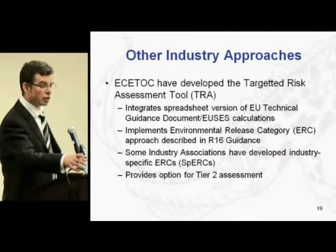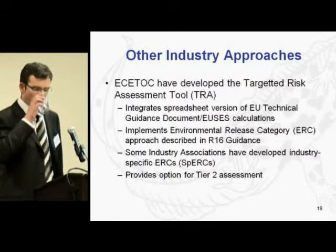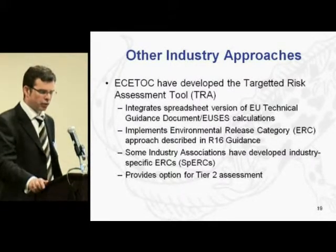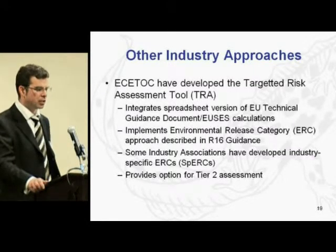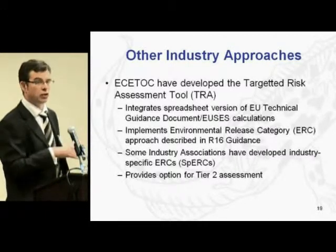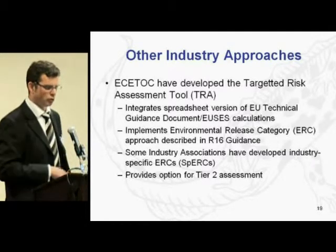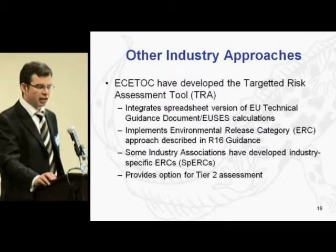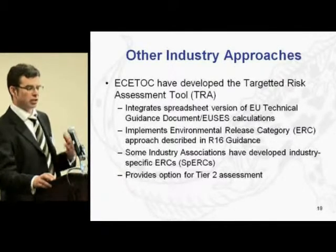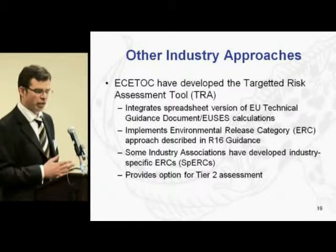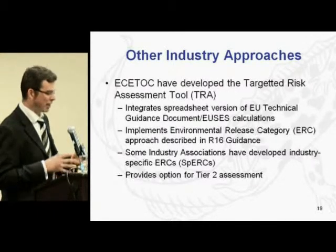We were also asked to look at what other industries have developed. The key industry approach is the Targeted Risk Assessment tool, the TRA, developed by ESSETOC. With regard to the environment and humans exposed via the environment, the tool integrates the spreadsheet version of the EU Technical Guidance Document E-USES calculations, and it implements the Environmental Release Category approach described in ECHA R16 guidance.